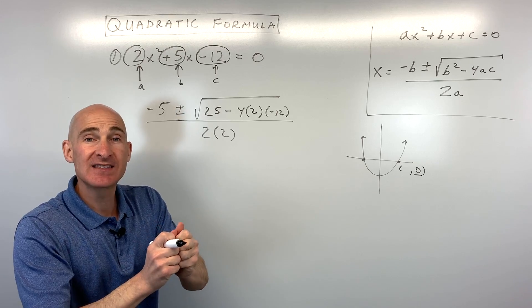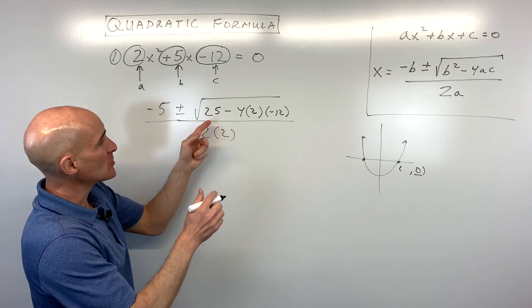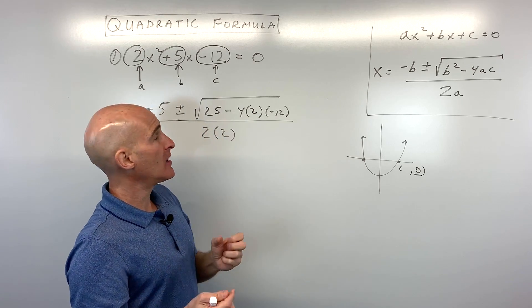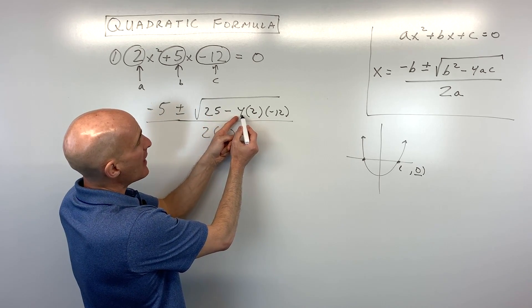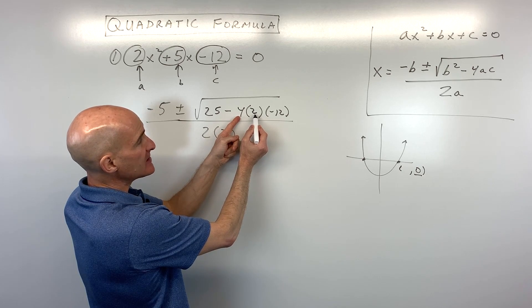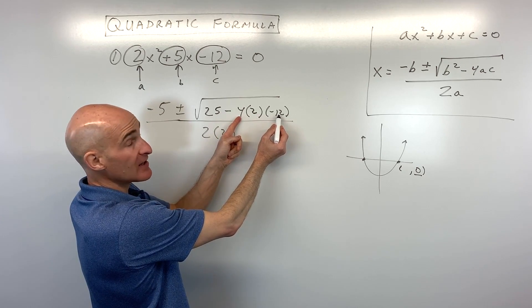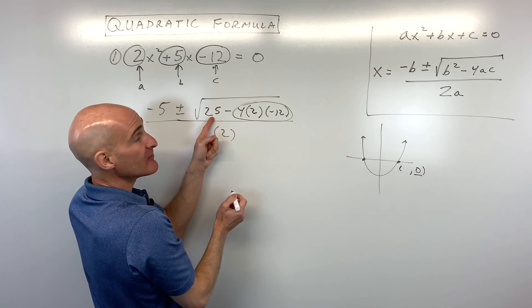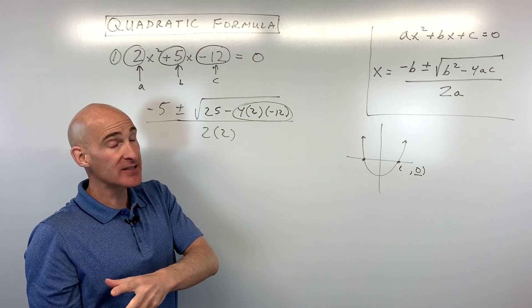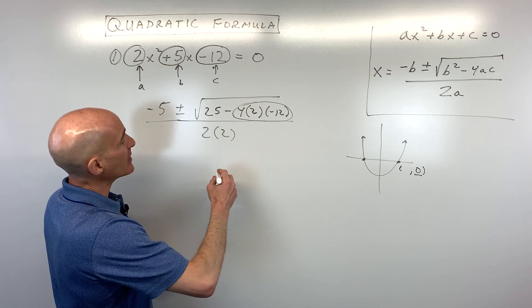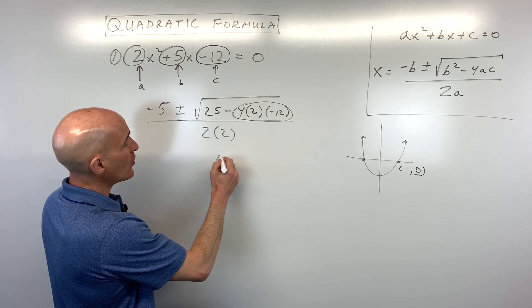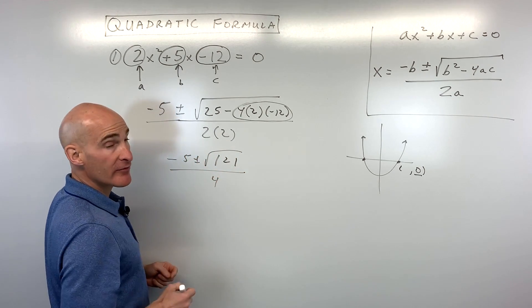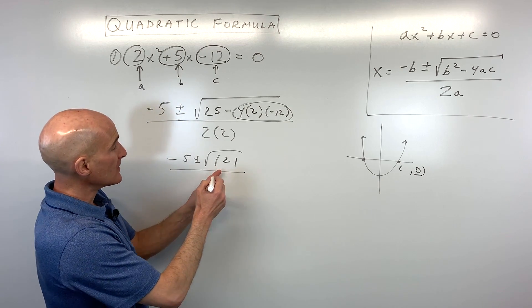So now what you want to do is you want to work from the inside out, and you want to simplify. So sometimes students get a little bit confused with all the positives and negatives, so make sure to be careful with that. Let's take it step by step here. So we have 4 times 2 is 8. 8 times negative 12 is negative 96. So now we have 25 minus negative 96. So that's like 25 plus 96, and that gives us 121. So now we have negative 5 plus or minus the square root of 121 divided by 4. Square root of 121 we know is 11.